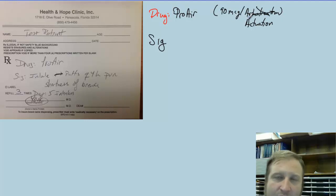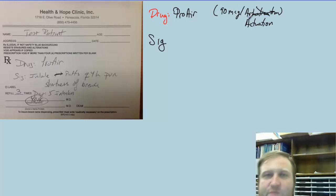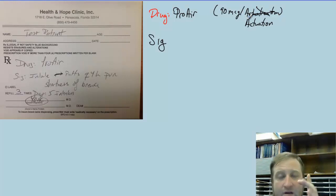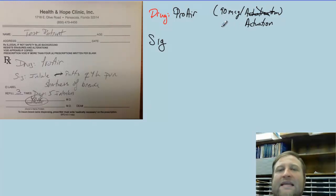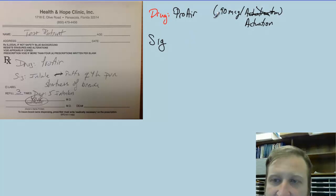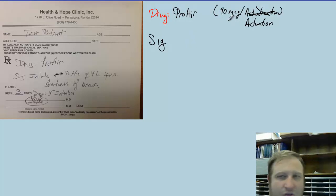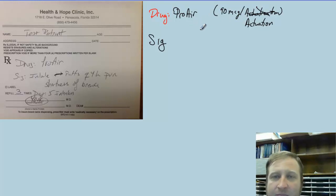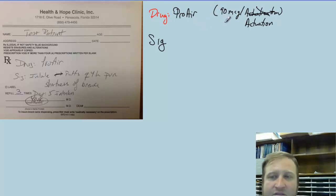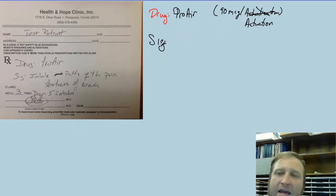90 micrograms per actuation means that every time the ProAir is depressed and they inhale, they're going to be inhaling 90 micrograms of that albuterol sulfate. There's no other concentration of ProAir — it's the only concentration that ProAir exists in. All of the inhalers, whether it be ProAir, Ventolin, or Proventil, all come in the same dose of 90 micrograms per actuation, though they differ in terms of mass.